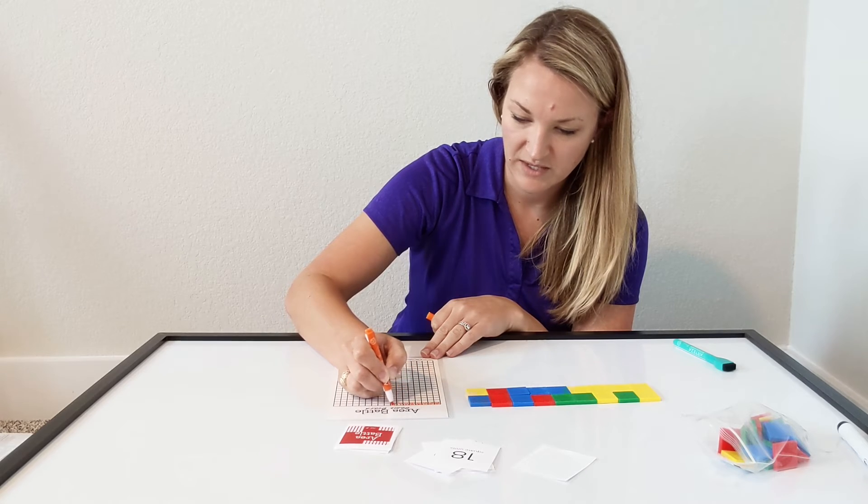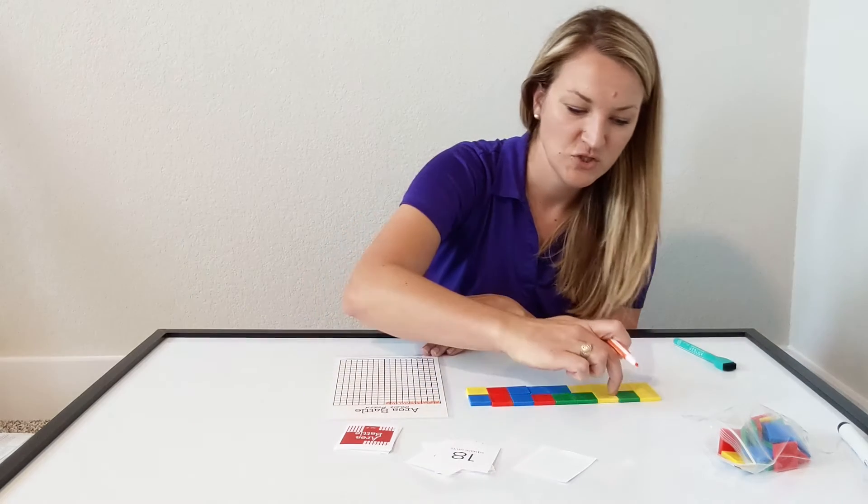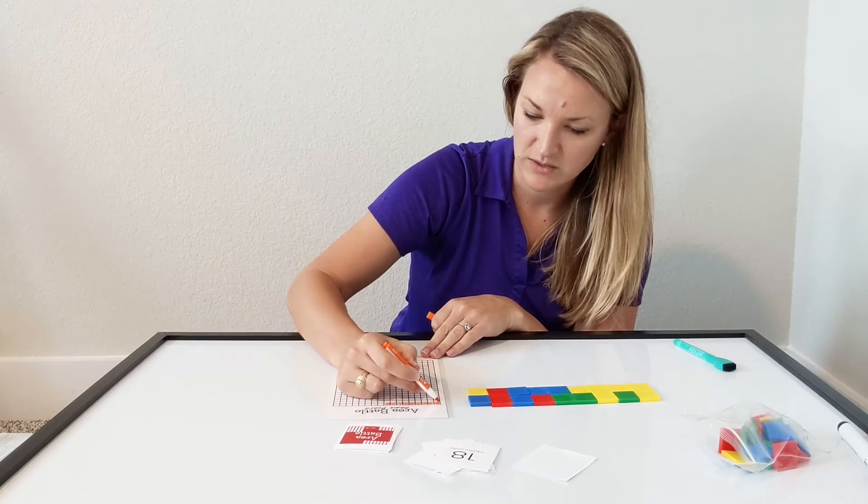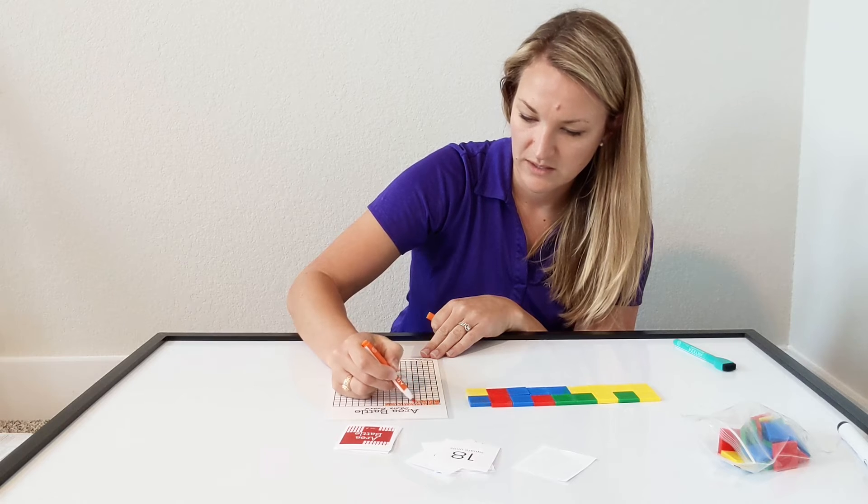5, 6, 7, 8, 9. And I have 2 rows of 9 squares, so I would color in another row.